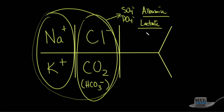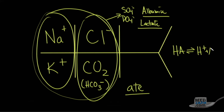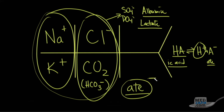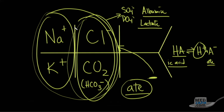What about beta-hydroxybutyrate? In fact, anything that ends in '-ate' (A-T-E) is usually the weak base of a strong acid. So HA dissociates into H+ plus A−. An '-ic acid' dissociates into a proton and an '-ate.' Examples: lactic acid converts into a proton and lactate; beta-hydroxybutyric acid dissociates into a proton and beta-hydroxybutyrate; sulfuric acid, phosphoric acid, etc. Whenever we see an '-ate,' that's a negative charge not seen in the chloride or CO2 columns.